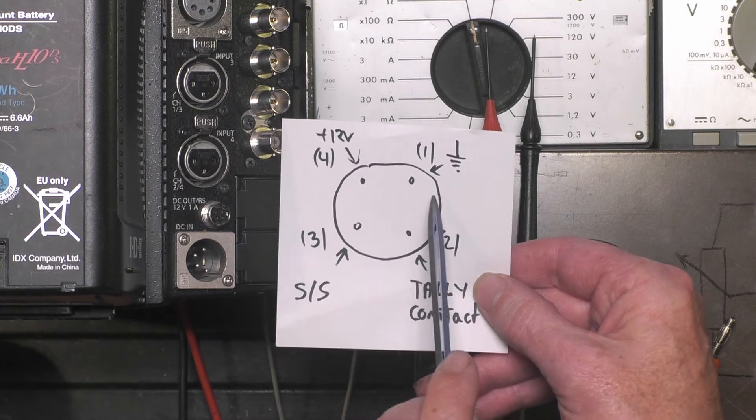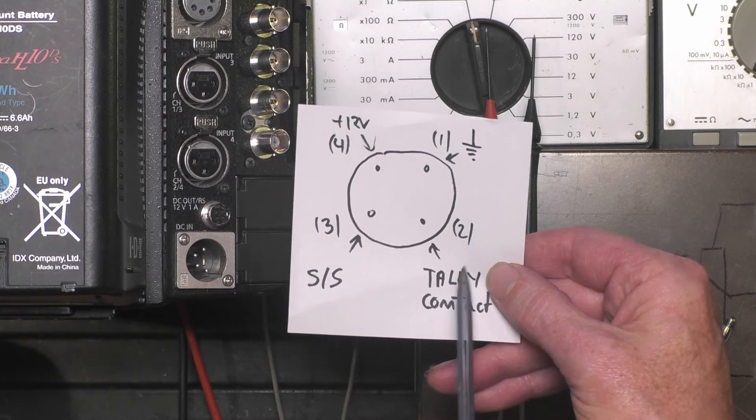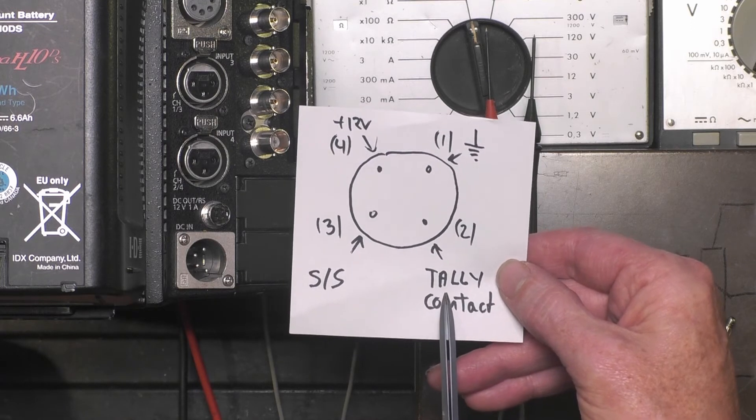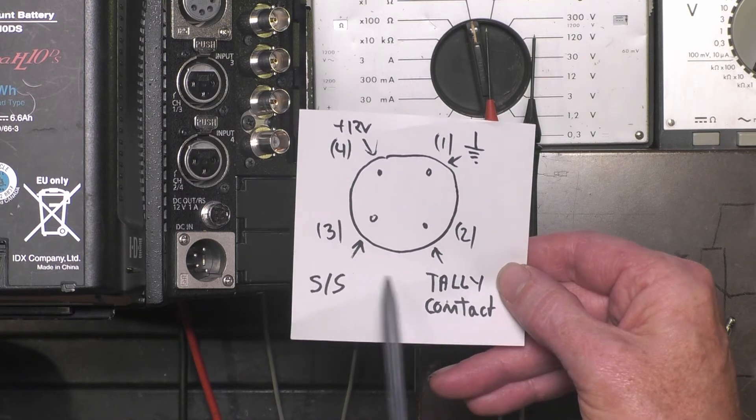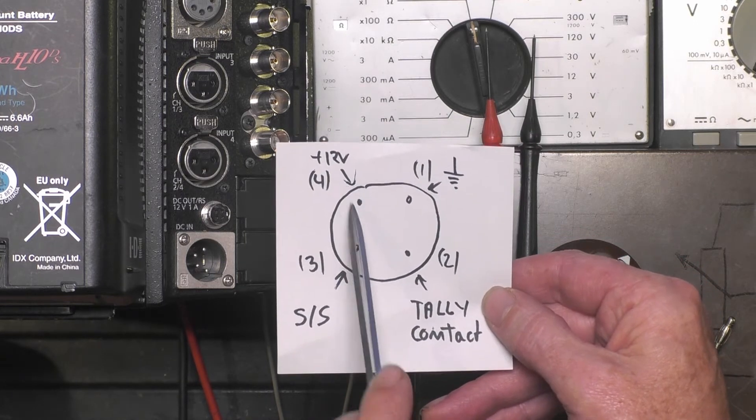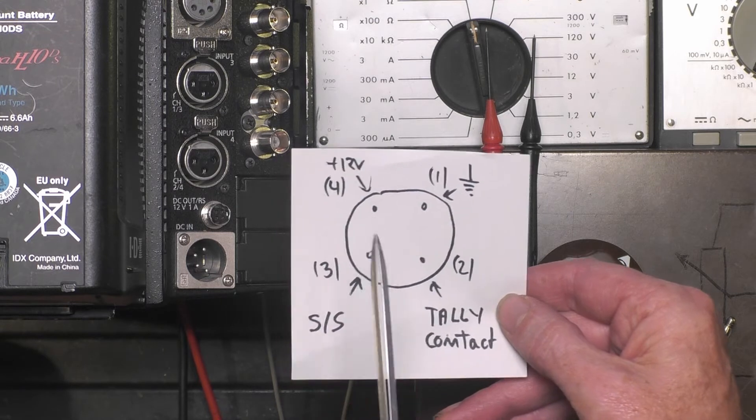Then you count clockwise for the other pins. Pin 2 is the tally contact, I will explain later what it does. Pin 3 is the start-stop command, and pin 4 is the 12 volt output to power some small external accessory that is connected to this connector.